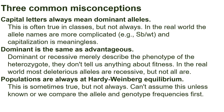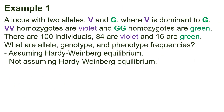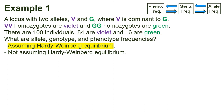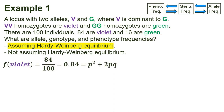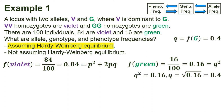Example 1: consider a locus with two alleles V and G, where V is dominant to G. VV homozygotes are violet and GG homozygotes are green. There are 100 individuals: 84 are violet and 16 are green. We'll calculate allele, genotype, and phenotype frequencies — once assuming HWE and once not. Assuming HWE: the frequency of the green phenotype is 16 divided by 100, which is 0.16, and this equals Q squared. So Q equals the square root of 0.16, which is 0.4. Since P plus Q equals 1, P equals 1 minus 0.4, which is 0.6.